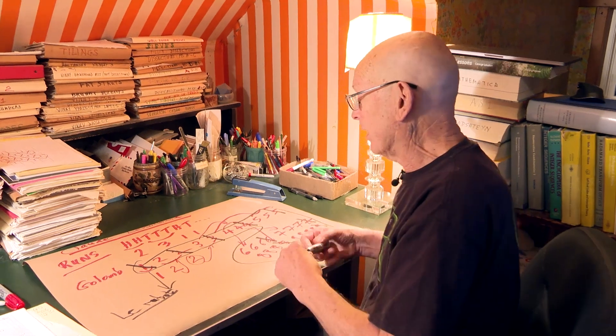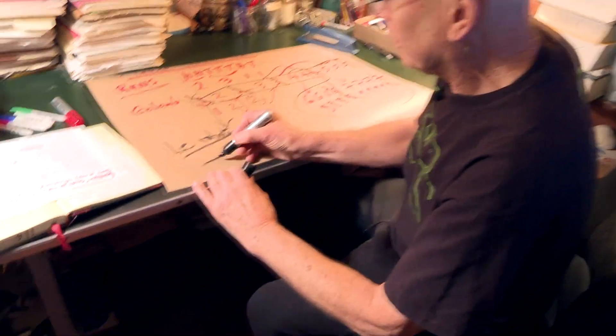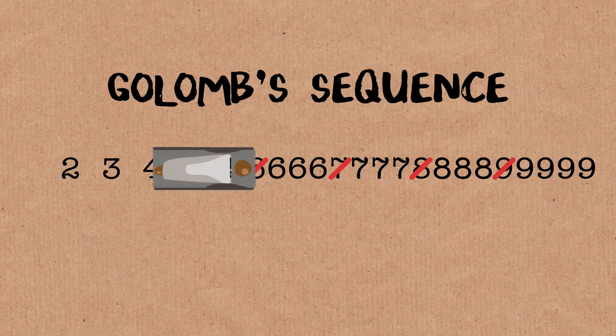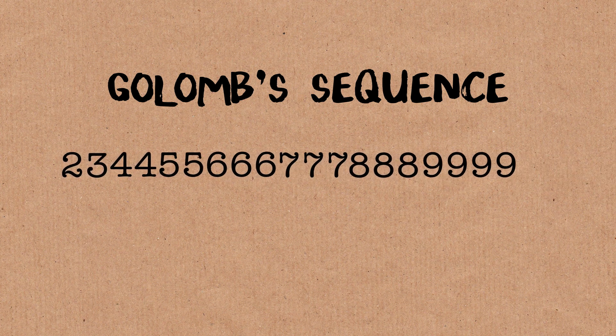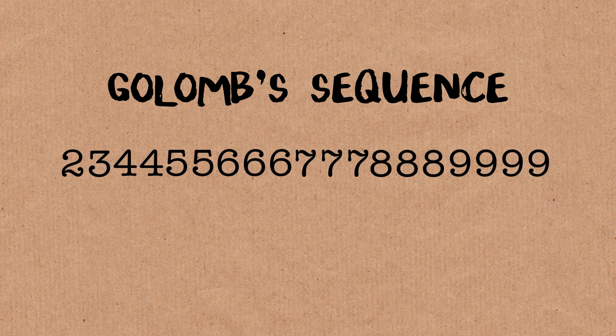And what we get, the new sequence, is simply two, three, four, four, five, five, six, six, six, seven, seven, seven, and so on. So this is the planed down version of Golomb's sequence.